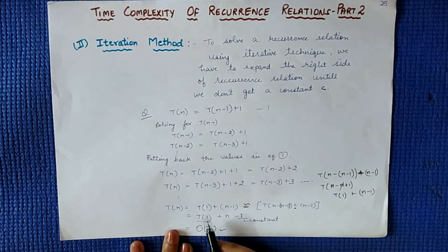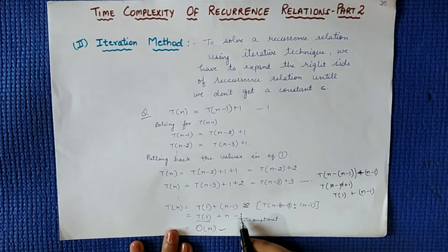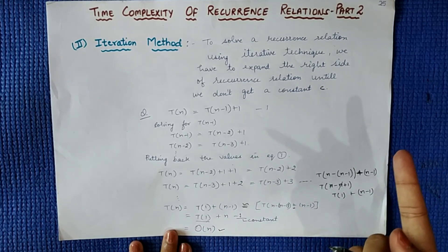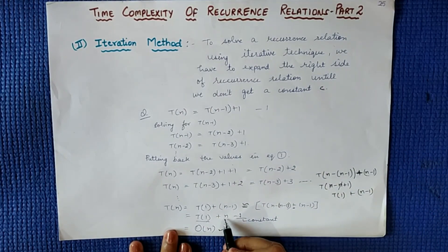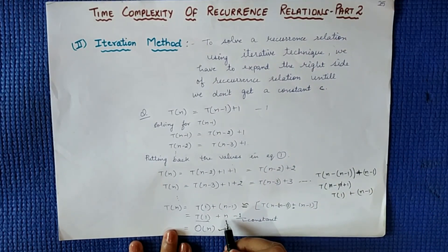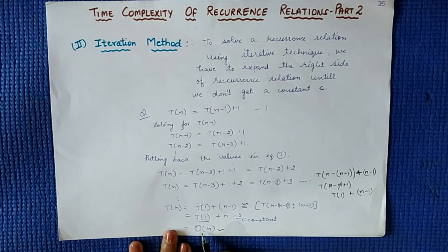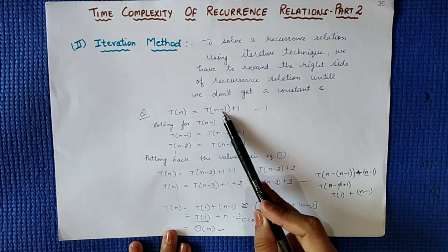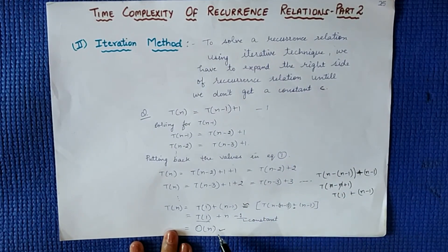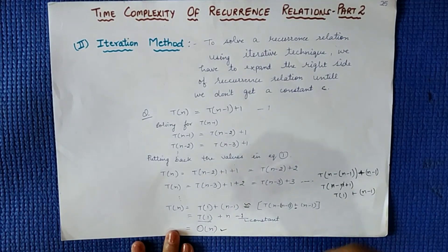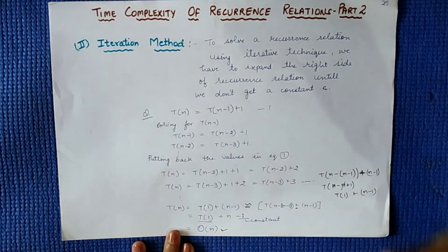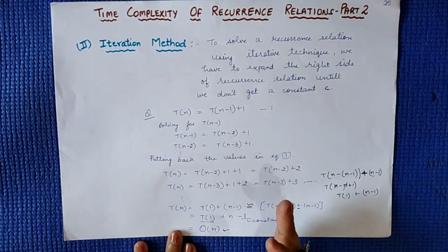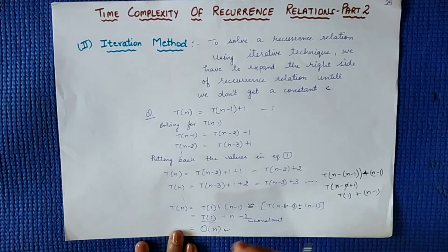T(1) is a constant, and the 1 is also a constant. Both are constants, so our complexity depends on n. The maximum power of n is 1 only. So the complexity we get is O(n). For the function T(n) = T(n-1) + 1, the complexity is O(n). This is the simple iteration method — we keep solving the function up to T(1) and find complexity based on n.